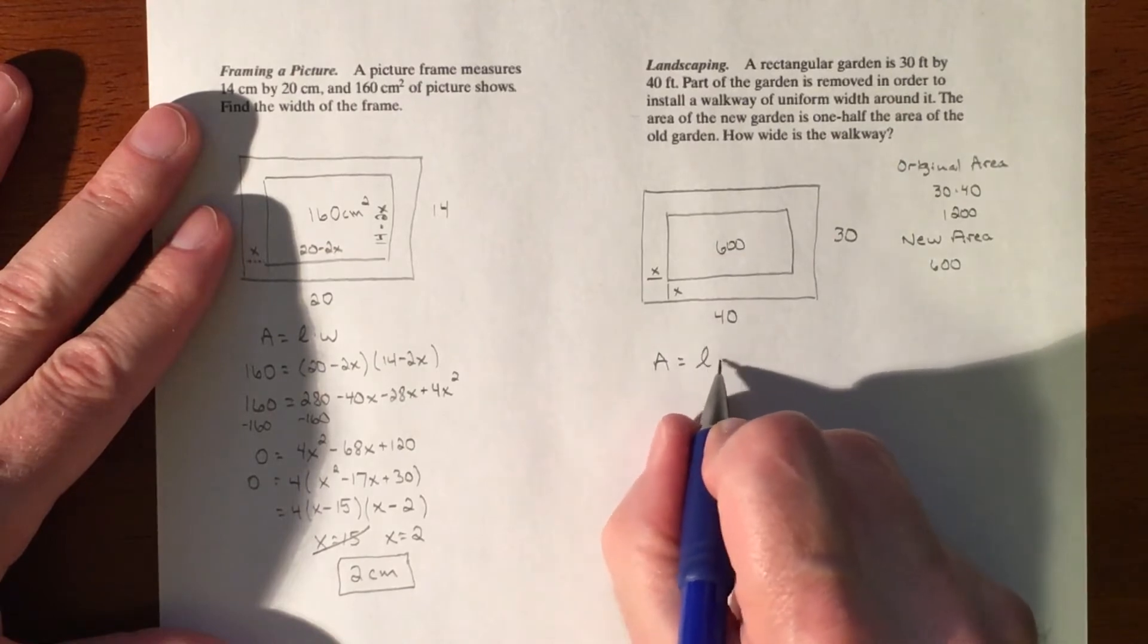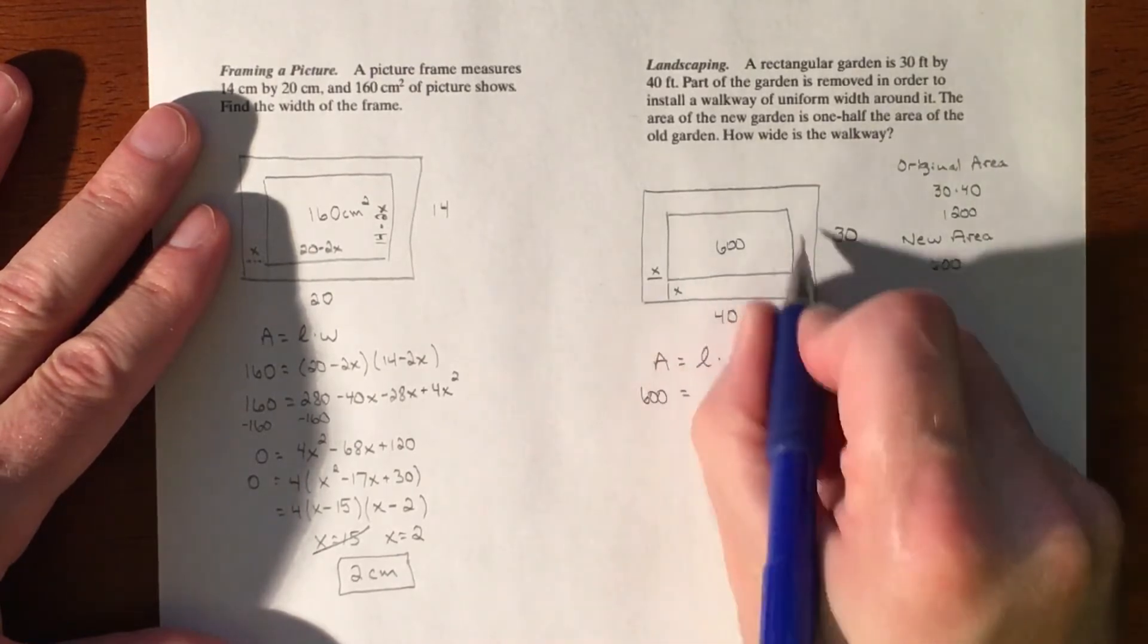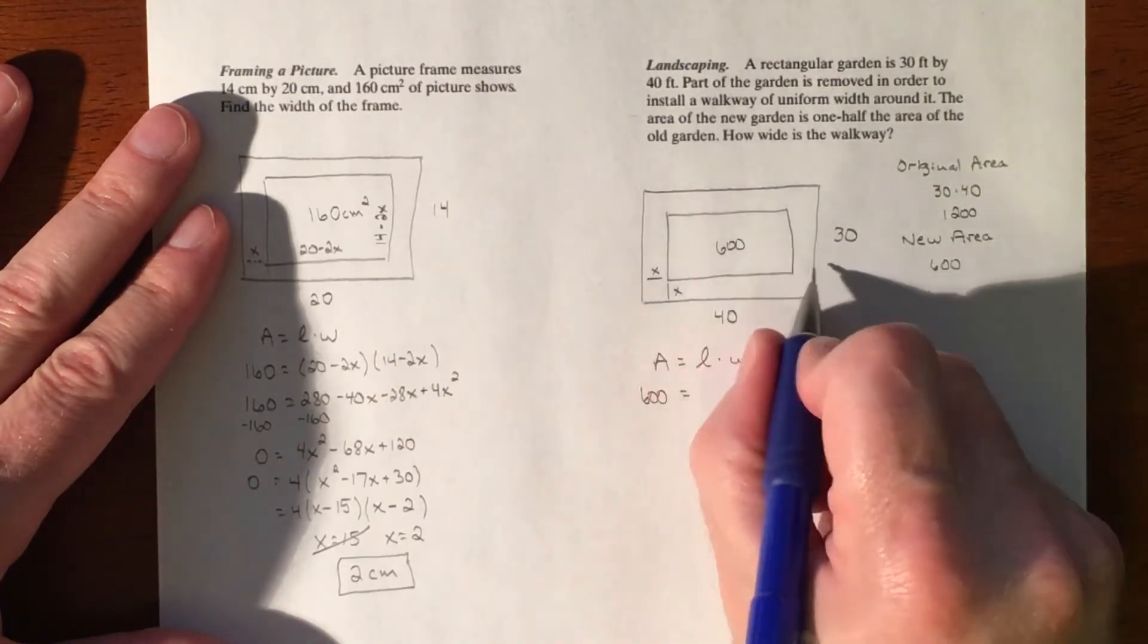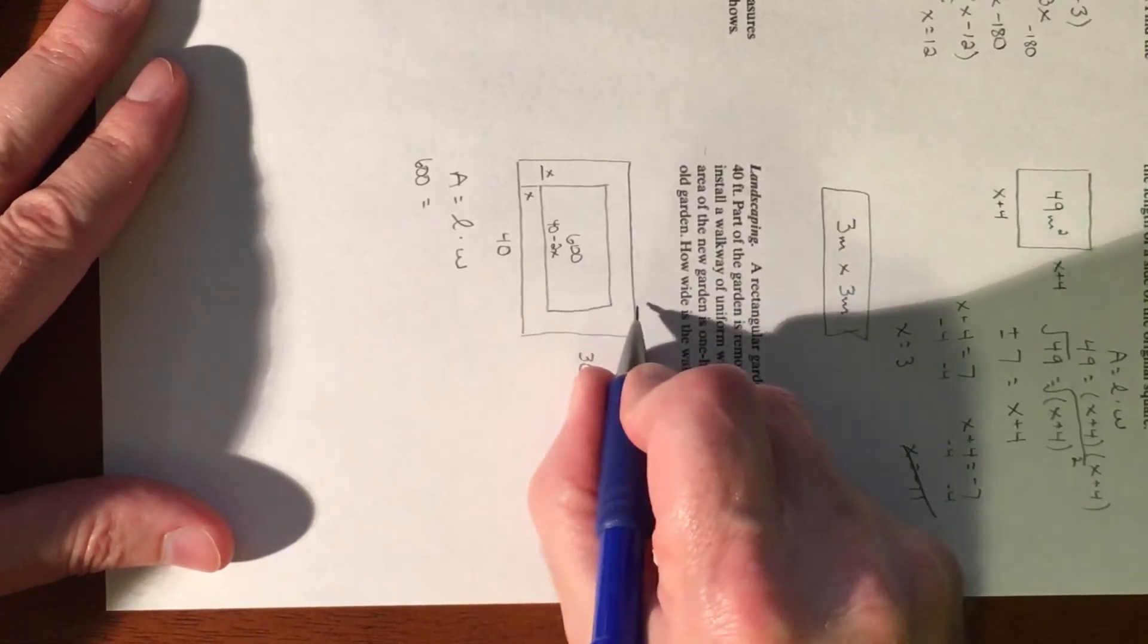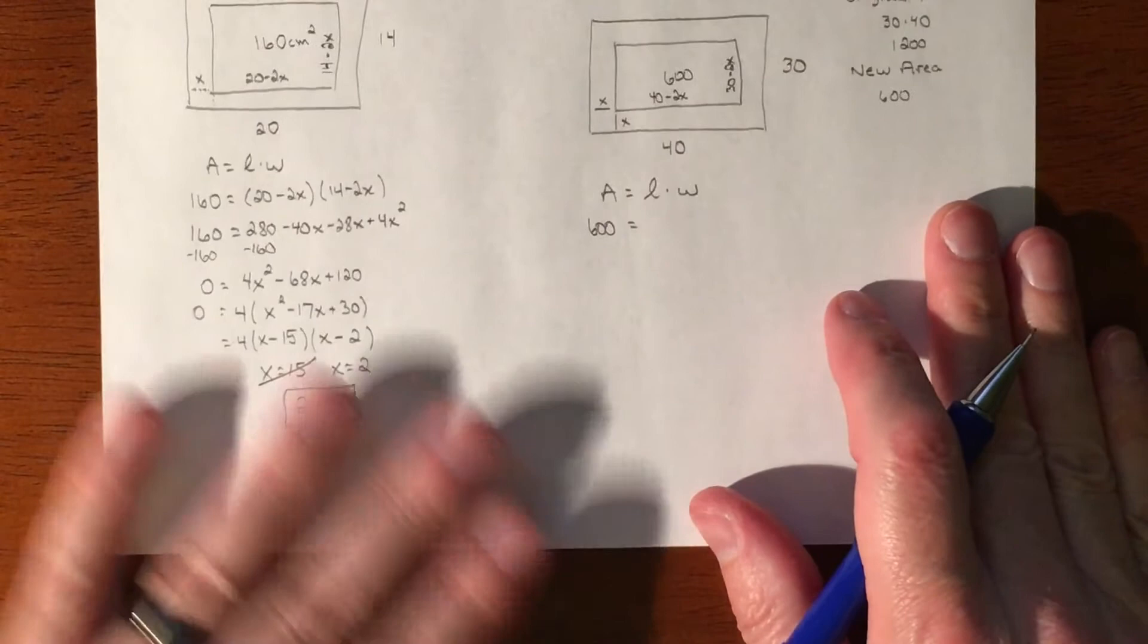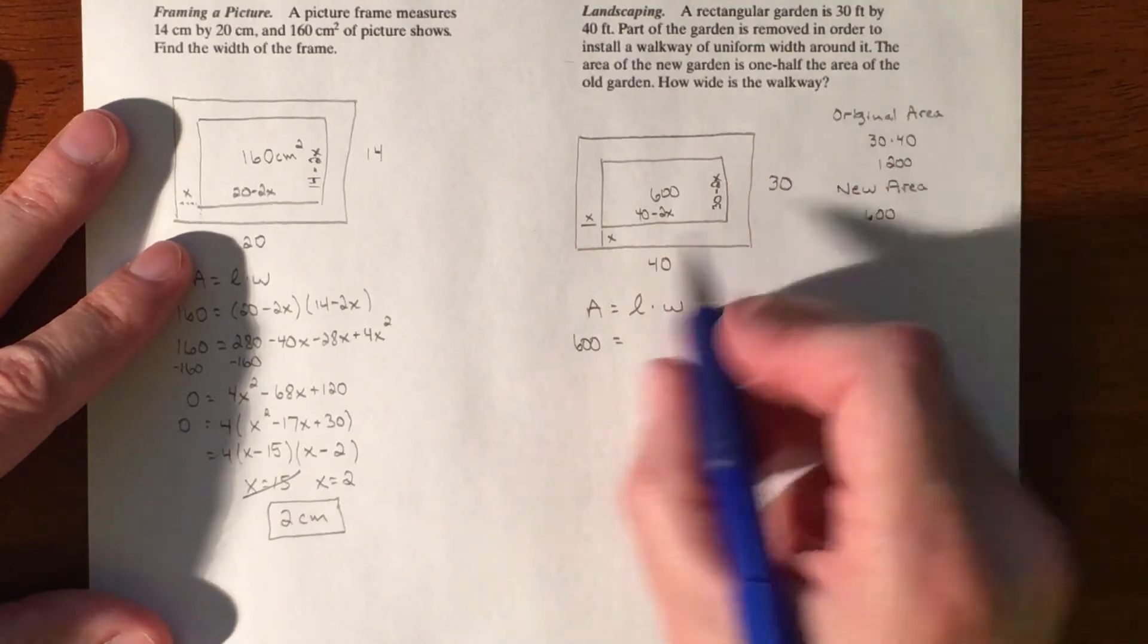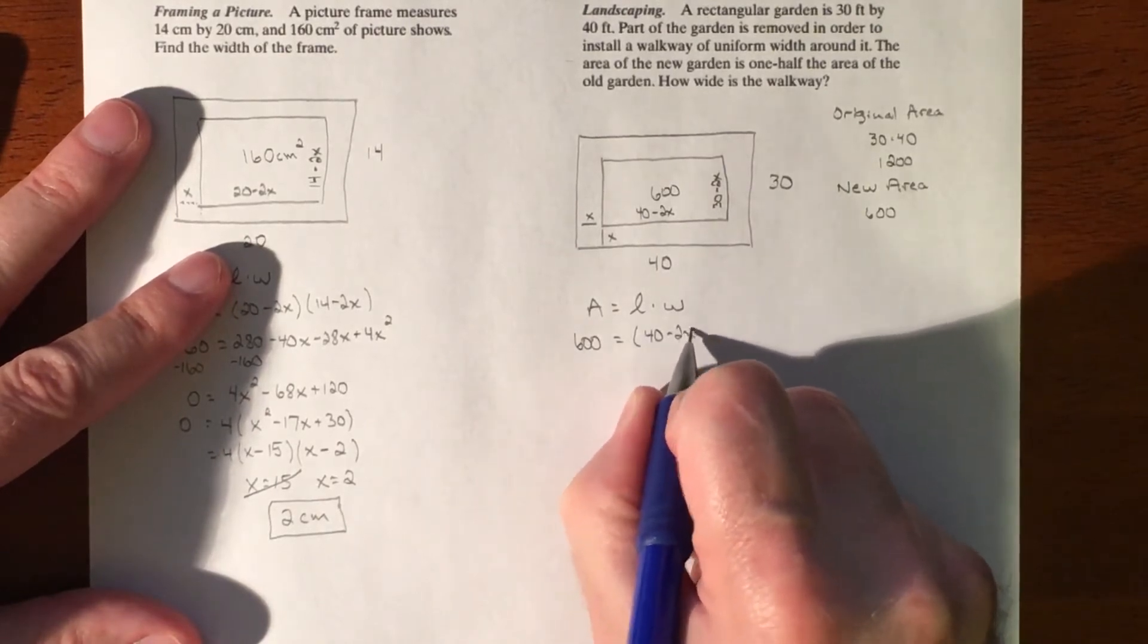Next thing is we need a formula. So we're talking about area is going to equal the length times the width. Our area is 600. Our lengths and widths, we got to figure that out. So it was 40 all the way across, but we're cutting an x and an x off of both sides, so that's going to be 40 minus 2x. And then we're doing the same thing here where we had 30 all the way across and we're cutting a 2x away because we're cutting an x off and an x off on each side. So how thick is the walkway all the way around?